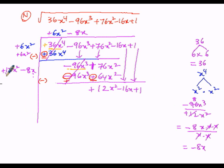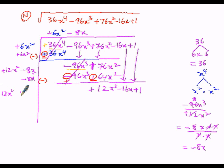The first term 12x squared is copied with its positive sign. Now we have to add up the last term of the divisor: minus 8x is the last term, so we add up the same minus 8x. Minus of minus is plus, so 8 plus 8 gives 16x. The new sign is negative, giving minus 16x. The new dividend is 12x squared minus 16x plus 1.